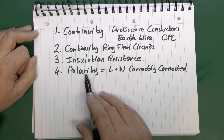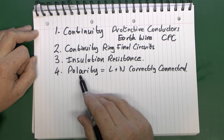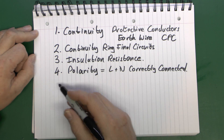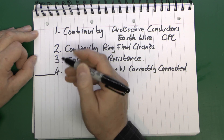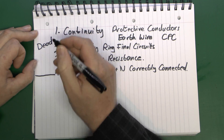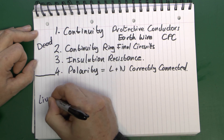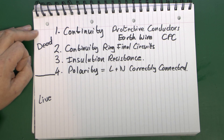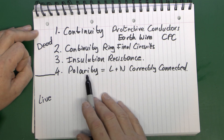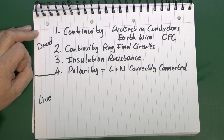This test can be done dead — as in no power connected — or it can actually be done live once the power has been connected. So this really marks the division between dead testing and live testing. In most cases you'll probably have done polarity as part of one of the continuity tests, so individually it doesn't necessarily have to be done at that specific point.